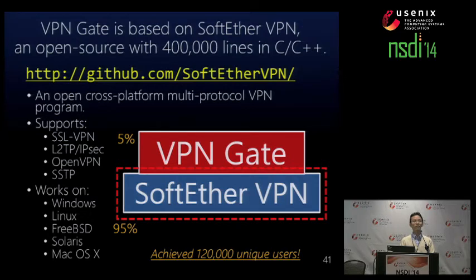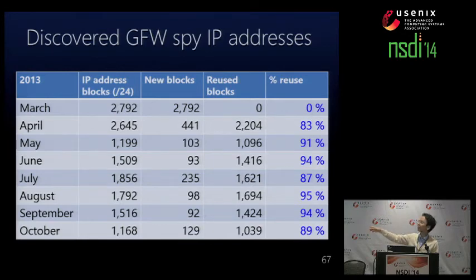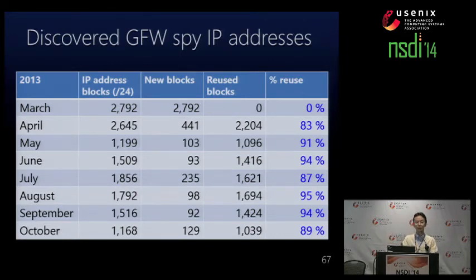Question from Aaron Gember, University of Wisconsin: How many different IPs from the authority were you seeing attempting to do the probing? According to our research, this slide shows the number of discovered spy IP addresses from the authorities. It implies they have a lot of clustered IP address blocks. For example, in March they had 2,700 clustered IP addresses. The important thing is that they are reusing these source IP addresses for a long time — they have probably fixed, very discrete IP address blocks for probing tasks.